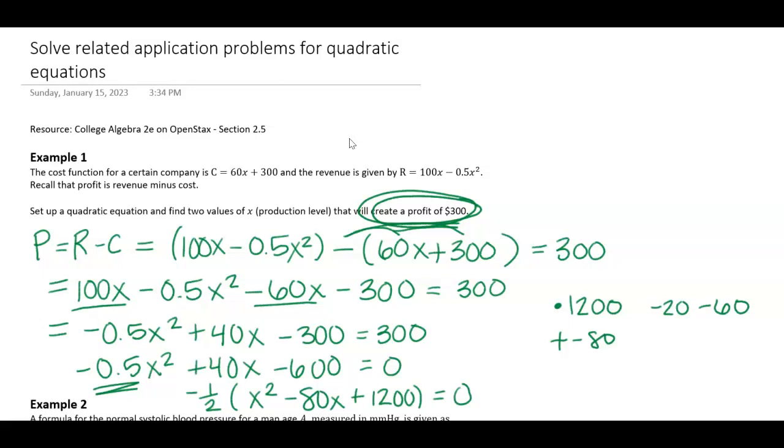That means I'm not going to worry about that negative 1/2. I'm just going to place it to the front. My two factors are (x - 20) and (x - 60).